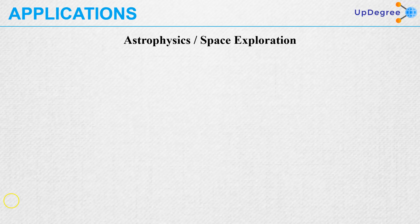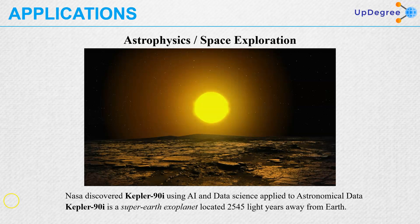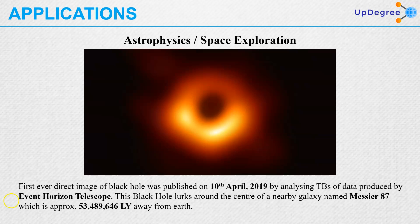In astrophysics and space exploration, NASA discovered Kepler-90i using artificial intelligence and data science applied to astronomical data. Kepler-90i is a super-Earth exoplanet located 2,545 light years away from Earth. The first ever direct image of a black hole was published on 10th April 2019, by analyzing terabytes of data produced by the Event Horizon Telescope. This black hole lurks around the center of a nearby galaxy named Messier 87, approximately 53 million light years away from Earth.